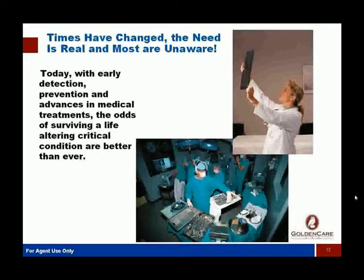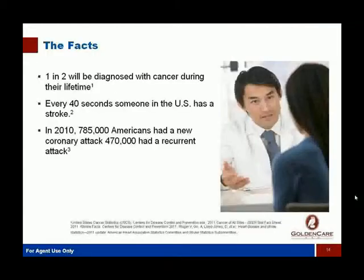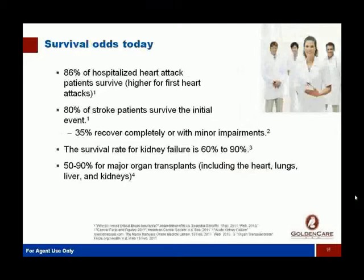It's pretty easy to understand why critical illness is growing in the U.S. People are having these illnesses more and more often, and more importantly, people are living through them. One in two people — almost 50% — are diagnosed with cancer at some point in their life. Every 40 seconds, someone in the U.S. has a stroke. Heart attacks and recurrent heart attacks are huge numbers. 86% of hospitalized heart attack patients survive — even higher on the first heart attack. Almost anybody over 25 knows someone who's had a heart attack, stroke, or one of these major critical illnesses.